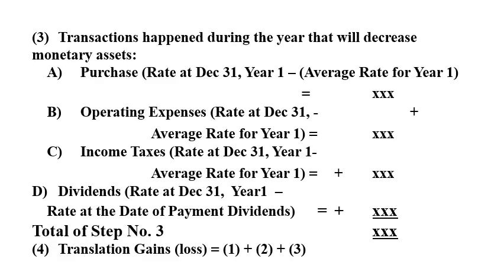Step three: transactions that happened during the year that decrease monetary assets. For purchases: purchase amount times the rate at December 31 minus the average rate for year one. For operating expenses: the same equation, times the rate at December 31 minus the average rate for year one. For dividends: dividends times the rate at December 31, year one, minus the rate at the date of payment of dividends.